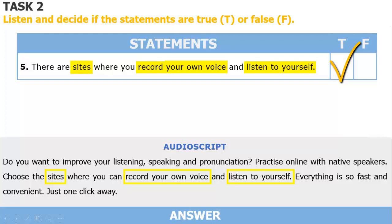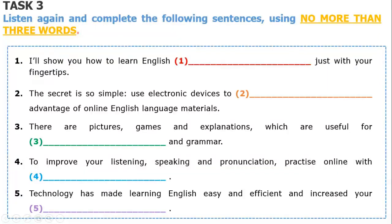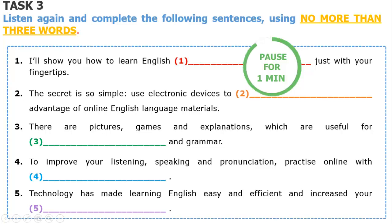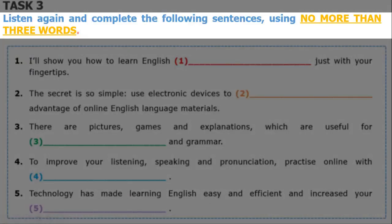We have practiced listening for specific information. Now, look at task 3. Listen to the recording again and complete the missing information using no more than 3 words. One minute for you to read through the 5 sentences first. Before doing this task, pay attention to the instruction: using no more than 3 words means you cannot fill in the gaps with 4 words — the maximum is 3 words.